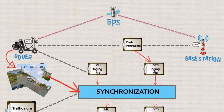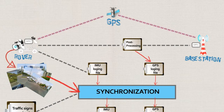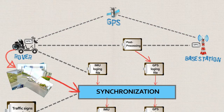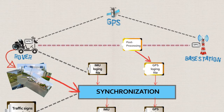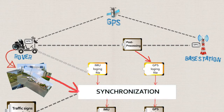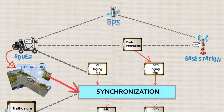Both the Rover and Base Station receive GPS signals. The Rover takes photos and records IMU parameters. After collecting data on the road, GPS, IMU, and photos are synchronized by software.